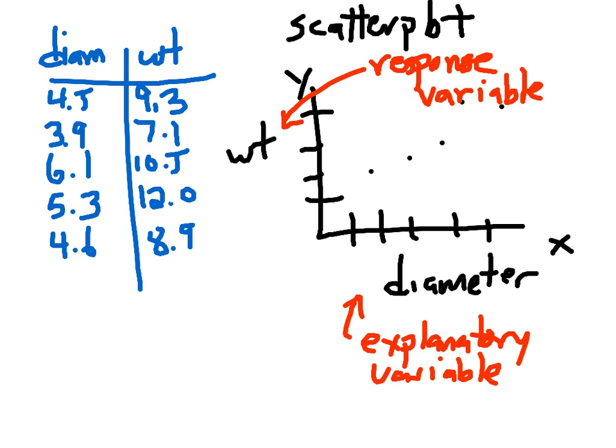The variable that we choose to plot on the y axis is called the response variable. But don't think sometimes that the response variable is in response to the diameter. Actually, we could pretty much freely flip-flop the x and the y, the explanatory and response variable. But be very careful about saying that one responds to the other, one causes something else.